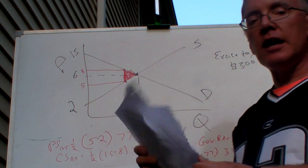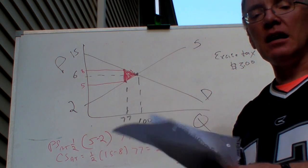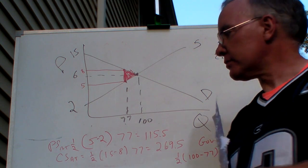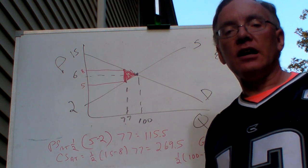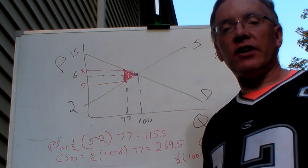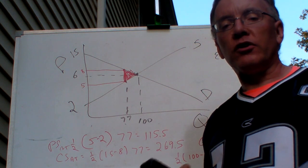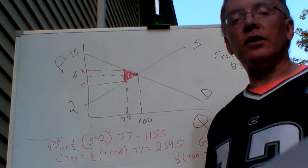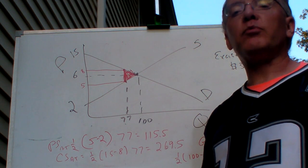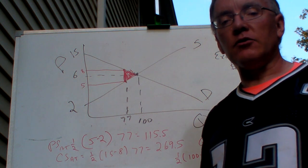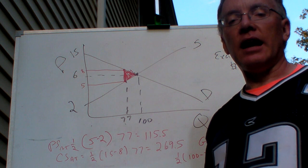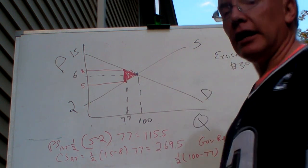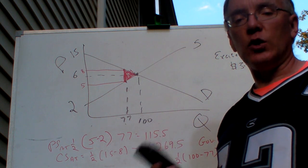A couple more examples with the same idea: we're going to demonstrate that the elasticity of supply or demand determines who ends up paying most of an excise tax — and that's true of any kind of tax. For example, with the FICA tax, workers have a very low elasticity of labor, so if their wage is subject to a tax they don't work much less. But firms that demand labor pull back pretty dramatically if labor costs rise. So workers end up paying the vast bulk of the FICA tax, even though legally it's supposed to be half and half.